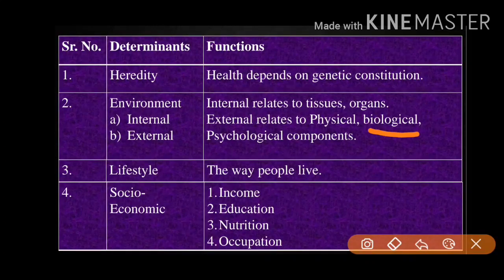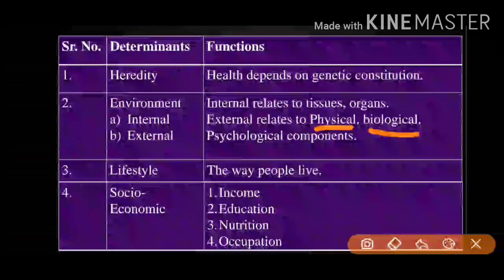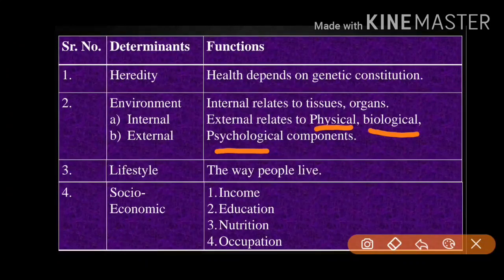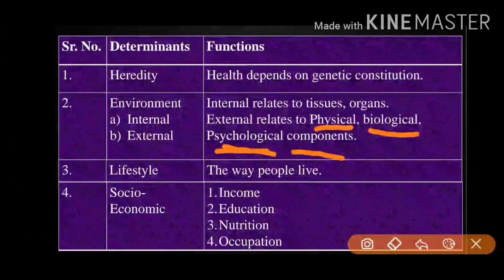Biological external factors include various animals, plants, and microorganisms that impact our health. Physical factors include land, air, and water — if air or water is polluted, it affects our health. Psychological components include fights with neighbors or relatives — if you are constantly in conflict, you are mentally disturbed. So psychological components include fights and jealousy.